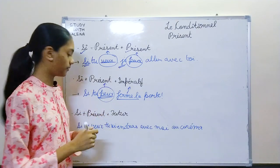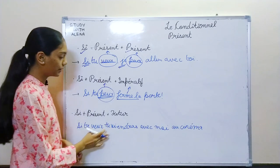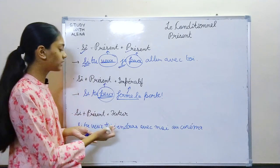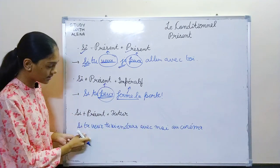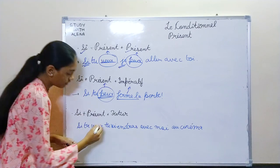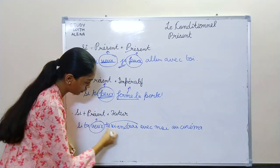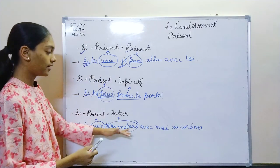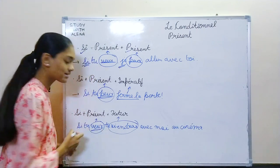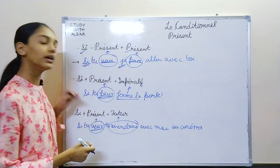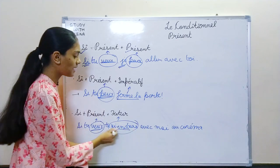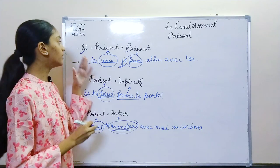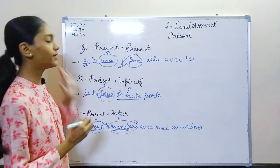The third expression is si plus present plus future: if you want, you will come — you can come with me to the cinema. So: present, viendra in future. Again, if viendra is a blank, put it in present form. But if the si-clause verb is a blank, you can put either imperatif or present. These are the three expressions used with si.